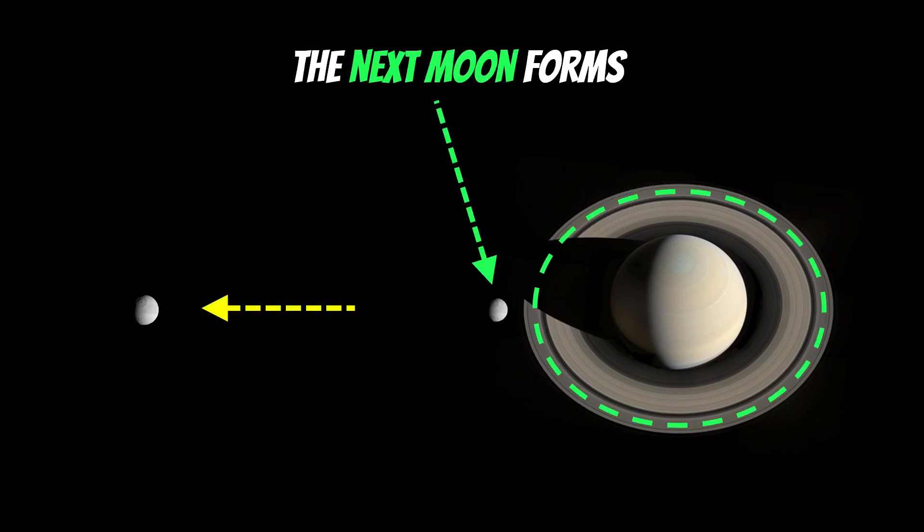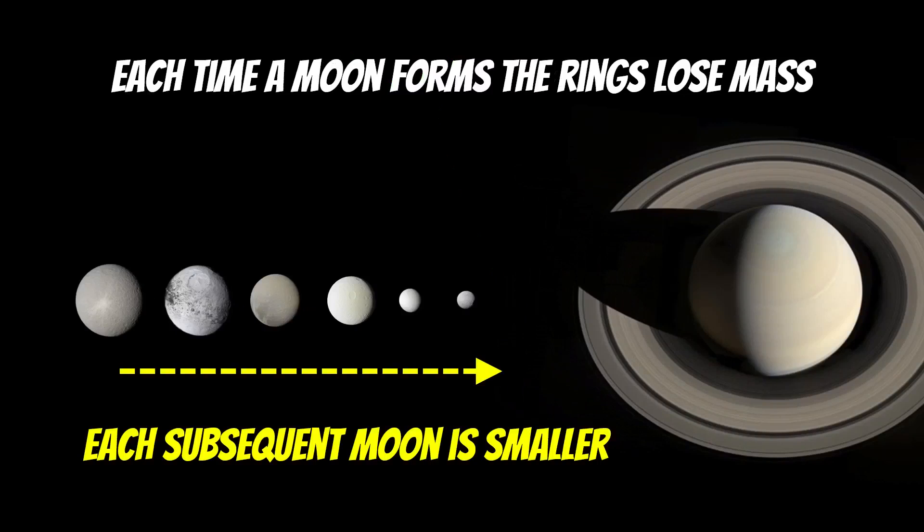Then what happens is that ring is still spreading beyond the Roche limit, so you then get another moon forming just outside of the ring again. The first one is still drifting away because it's causing these spiral waves on the ring, which obviously get weaker the further away it gets. Then this new one starts to form, and then the process starts again. That new one would cause structures in the ring that would then start to drift away as well. What happens is each time a moon forms, the ring is less massive. Some of that mass has been turned into a moon, so the ring actually shrinks.